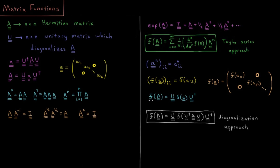To get f of big A, we take the result of the function applied to the diagonal case and then undiagonalize it. We apply the reverse unitary transformation: f of A equals U times f of little a times U dagger. Of course, we first need to diagonalize A, so we compute U dagger A U to get little a, then take the function on that result, and finally undiagonalize by applying U and U dagger. That is the diagonalization approach.